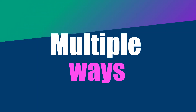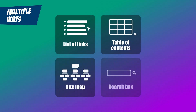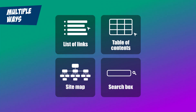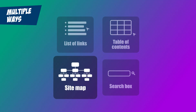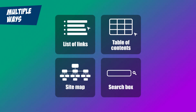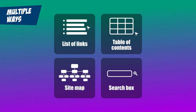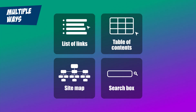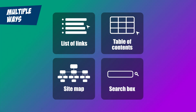Multiple Ways. We don't all engage with content the same way. When you're looking for something, do you prefer a list of links, a table of contents, a sitemap, or a search box? One way is the contextual links in the page content, but the answers are in the name — you need at least two, because it's multiple ways.